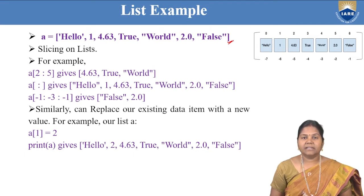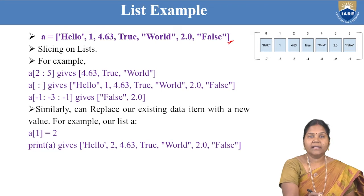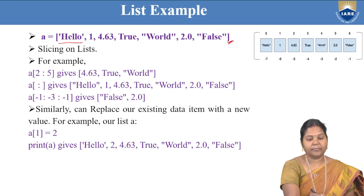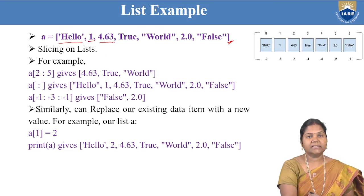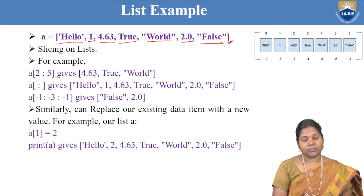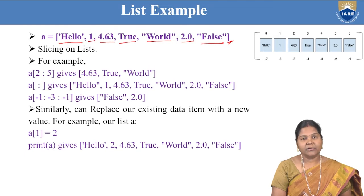Accessing list elements is like arrays in C language, but arrays are normally homogeneous types whereas a list is a heterogeneous type. You can write a number of data items of different data types — for example, 'hello' is a string, 1 is an integer, 4.63 is a float, True is a boolean, 'world' is a string, False is also a boolean. You can take a heterogeneous collection of data types and create a list.